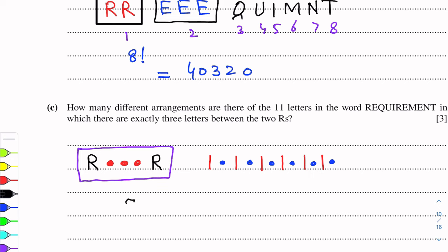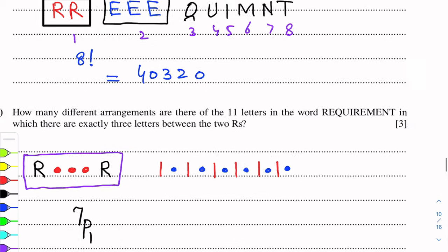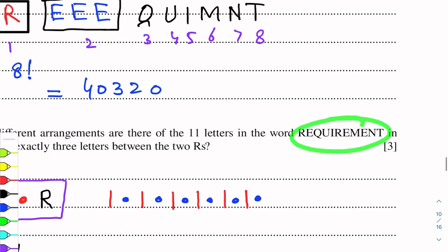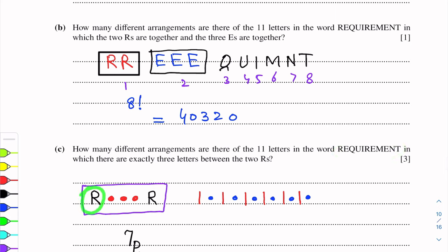Seven places where we can position this block. These give us 9 letters total to arrange. Three E's are remaining in the other 6 letters.